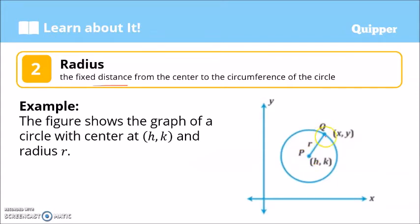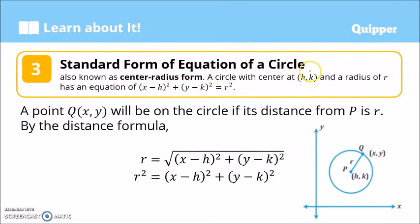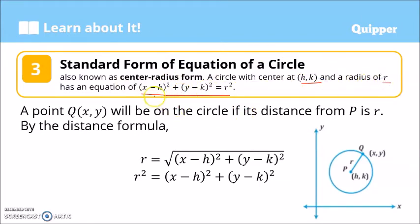The radius r is the distance from the center to any given point Q with coordinates (x, y). The standard form of the equation of a circle, also known as the center-radius form, is given by the equation: (x − h)² + (y − k)² = r². It is called the center-radius form because we only need to know the center and the radius of the circle to express the equation in standard form.